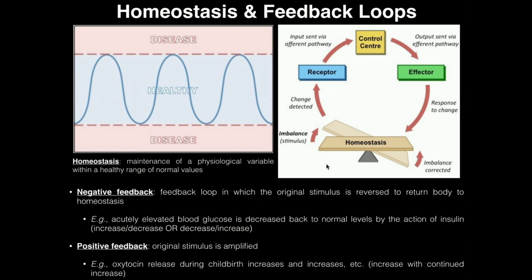If the initial imbalance was high blood glucose, the end result of negative feedback would be lowered blood glucose. If blood glucose starts to rise, negative feedback would cause it to come back down. Likewise, if blood glucose starts falling because we are fasting, then glucagon — another hormone — would be released and bring it back up. That bringing back up is another type of negative feedback.